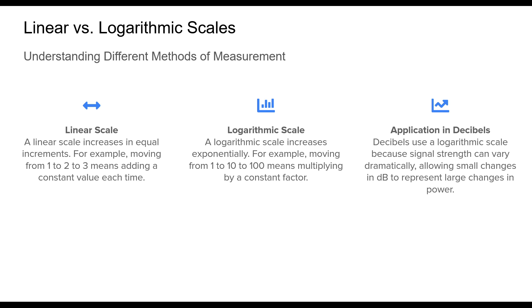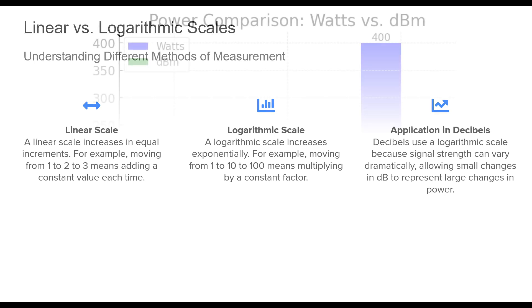With a linear scale, it increases in equal increments. For example, moving from one to two to three means adding a constant value each time. A logarithmic scale increases exponentially — moving from one to ten, or ten to one hundred means multiplying by a constant factor. Decibels use a logarithmic scale because signal strength can vary dramatically, allowing small changes in dB to represent large changes in power.